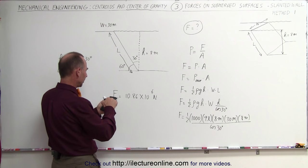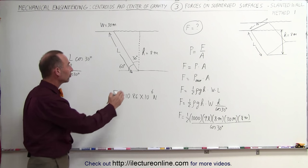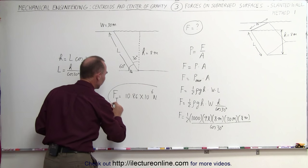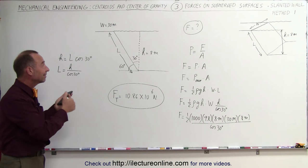Now let's see if the decimal place is in the right place. One, two, that's right. So almost 11 million Newtons of total force pushing against the slanted portion of the dam. And that is our first method by which we can calculate the total force on any segment of the dam.